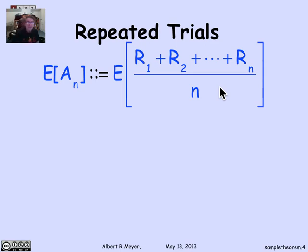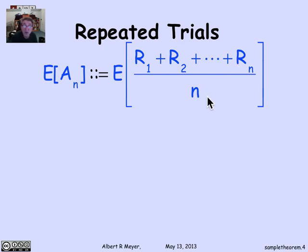Now the first question to ask is, what is the expectation of the average? And the expectation of the average is simply the expectation. Let's prove that. The expectation of the average is, by definition, the expectation of the sum of the r's over n.